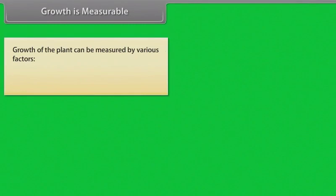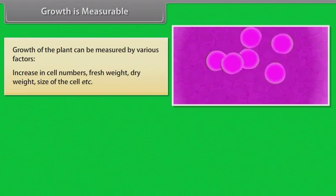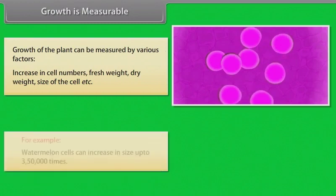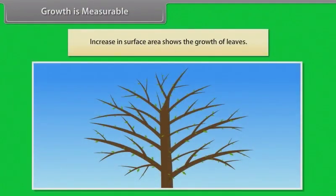Growth is measurable. Growth of the plants can be measured by various factors: increase in cell numbers, fresh weight, dry weight, size of the cell, etc. For example, watermelon cells can increase in size up to 3,50,000 times. Increase in surface area shows the growth of leaves.